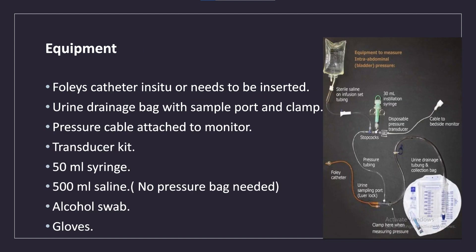Equipment required: a Foley catheter in situ or one that needs to be inserted; a urine drainage bag with sample port and clamp; a pressure cable attached to a monitor; a transducer kit; a 50 mL syringe; 500 mL saline — no pressure bag needed; an alcohol swab; and gloves.